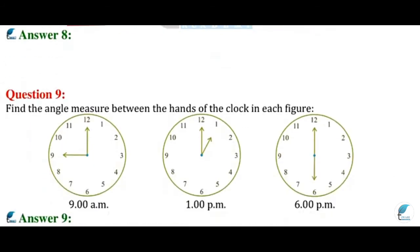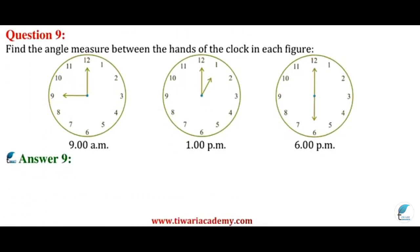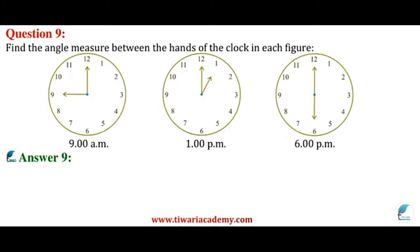Now let's talk about question number 9. Look here — there are hour hands and minute hands. With their help, we have to understand how many degrees the angle is. You can say directly that this is a 90 degree angle, and this angle will be a 30 degree angle.